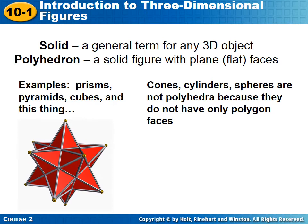There are other examples that we'll study that are solids, but they are not polyhedra. Cones, cylinders, spheres, those are not polyhedra because they do not have polygon faces. Anything that has any sort of curved surface is not a polyhedron.